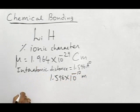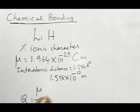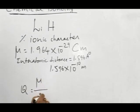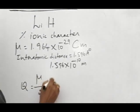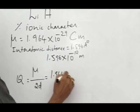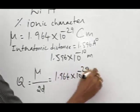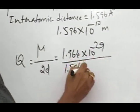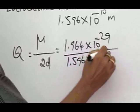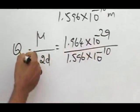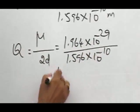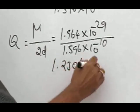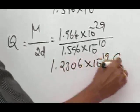Now we can calculate the charge separation. Q is equal to dipole moment divided by the distance. Normally, the distance is written as 2D. Here we have (1.964 × 10^-29) / (1.596 × 10^-10). On solving for Q, we have 1.2306 × 10^-19 coulomb.